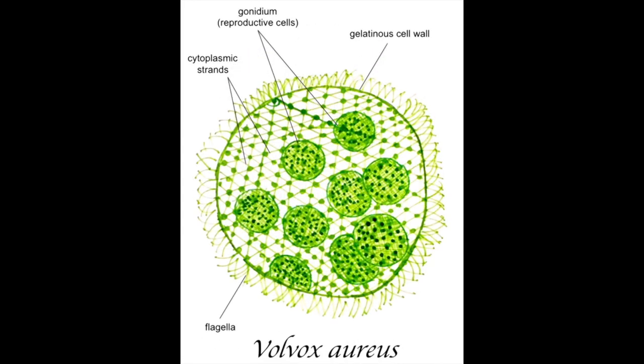Volvox aureus is a multicellular algae that contains daughter colonies, also known as gonidium, inside its gelatinous cell wall, held together by cytoplasmic strands. It moves using multiple diminutive flagella and contains cells that are similar to Chlamydomonas reinhardii on the outside of the cell wall to initiate reproduction. These cells are known as soma. The gonidium have the ability to reproduce asexually through repeated division, but Volvox aureus will reproduce sexually under conditions of stress.